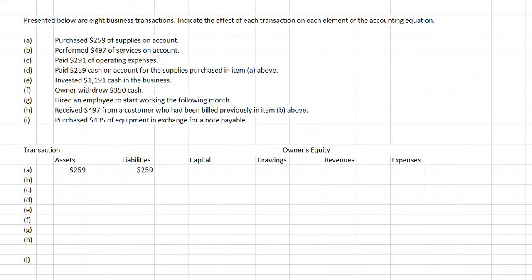B: performed $497 of service on account. So providing services, you will usually get cash or some sort of asset, so it will involve the asset accounts. And also, service basically is revenue. So in this case, it would involve the asset accounts and the revenue accounts.